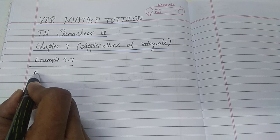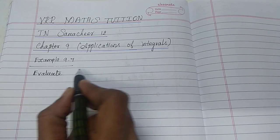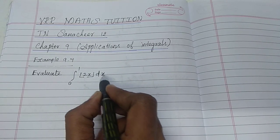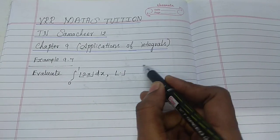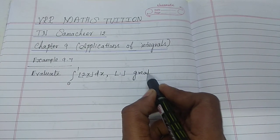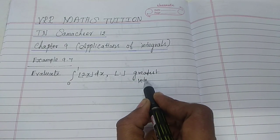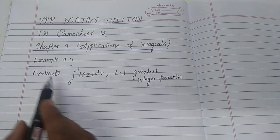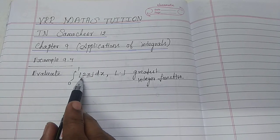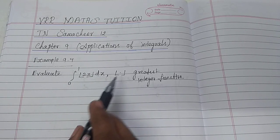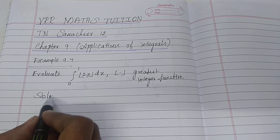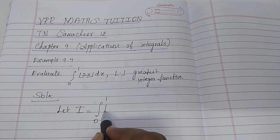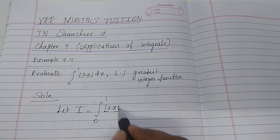Question: Evaluate the integral from 0 to 1 of the Greatest Integer Function of 2x dx. This symbol denotes the Greatest Integer Function. Solution: Let I be equal to the integral from 0 to 1 of the Greatest Integer Function of 2x dx.